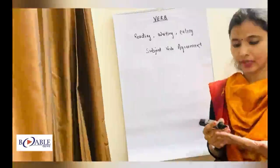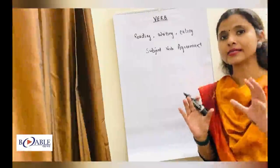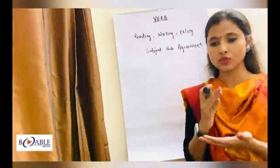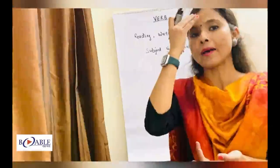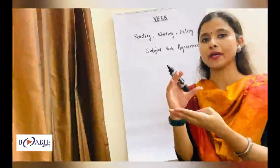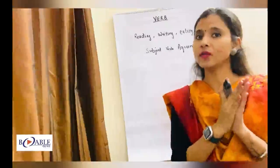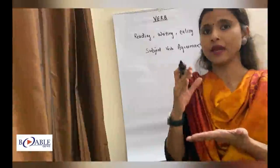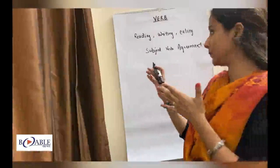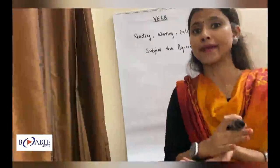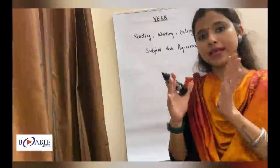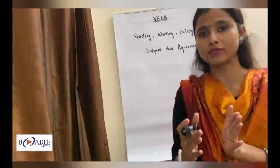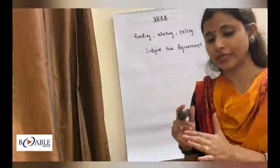Subject-verb agreement is what happens in every sentence. In every sentence, your Kriya should always be in agreement with your subject. Where there is a singular subject, there is a singular verb. Same, where there is a plural subject, there is a plural verb.